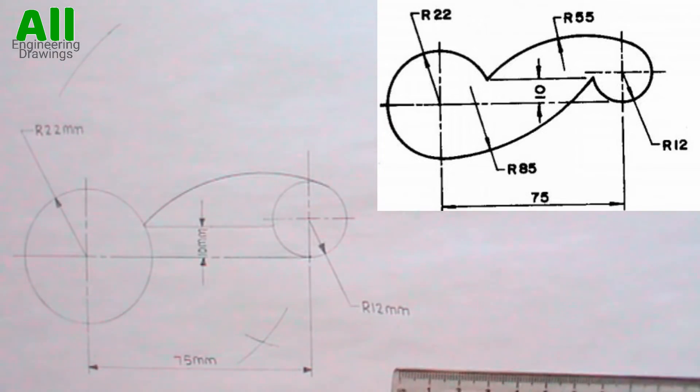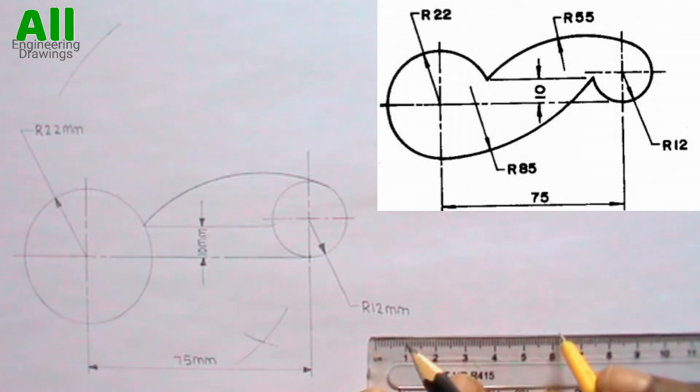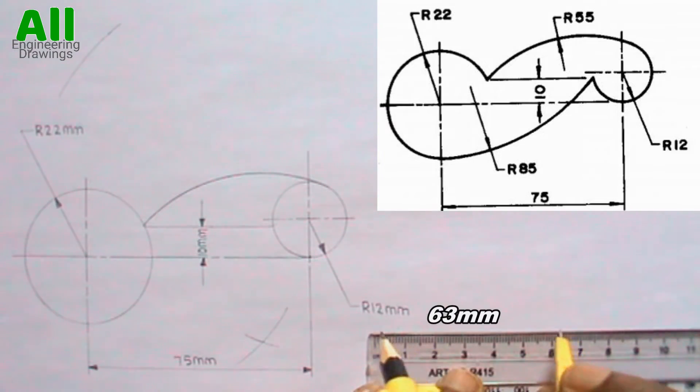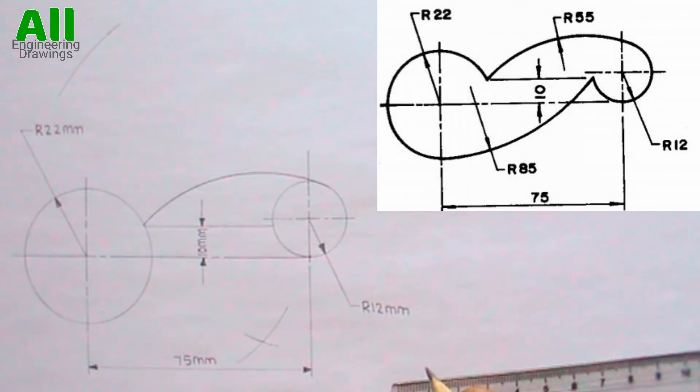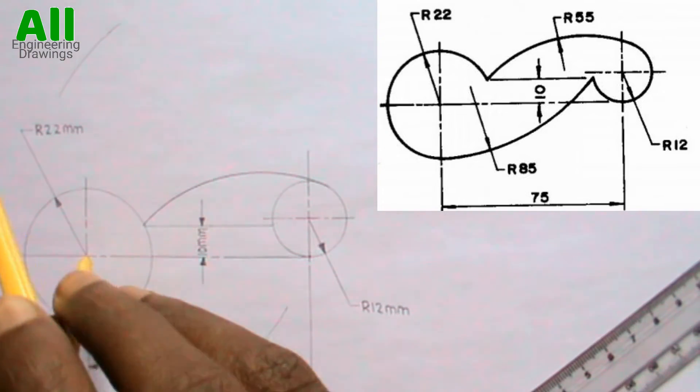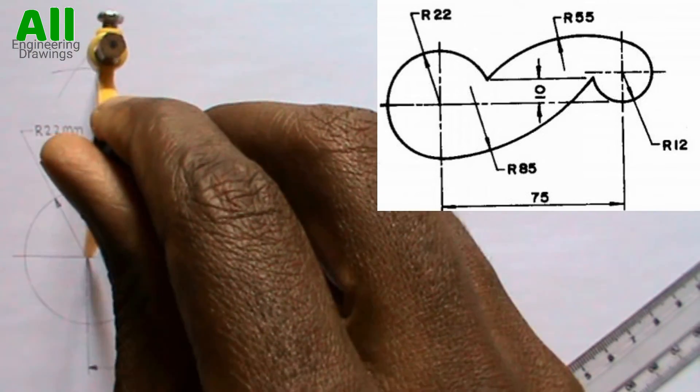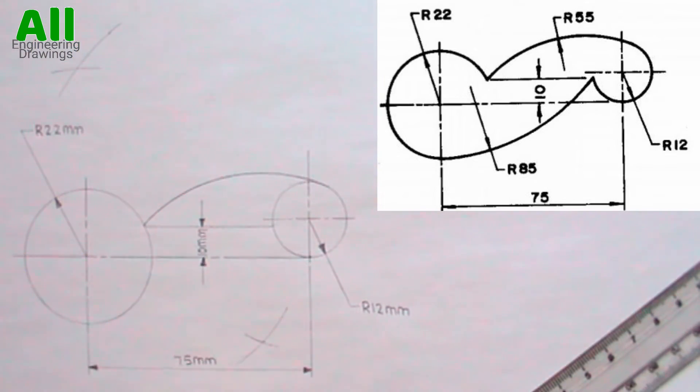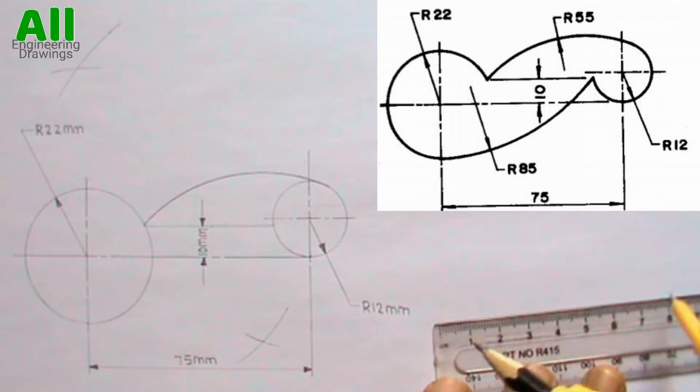Next, extend your compass to a radius of 63mm. Then, place your compass on the center of this circle. Cut an arc to intersect the previous arc you cut. I use a radius of 63mm because 85 minus 22 is equal to 63. Now, place your compass at the point where the arcs intersect. Then, with a radius of 85mm, produce the lower tangential arc.